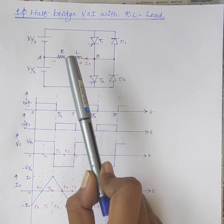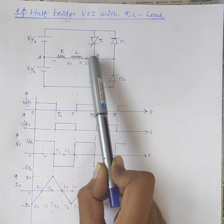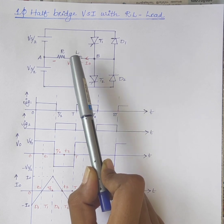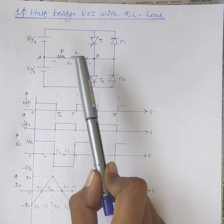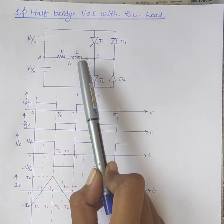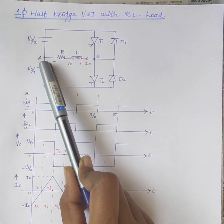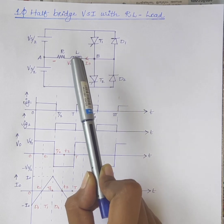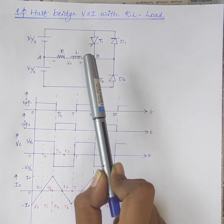If the current flows from point B to A, then the current will be considered as positive. Similarly, if the current flows from point A to B, then the current will be considered as negative.